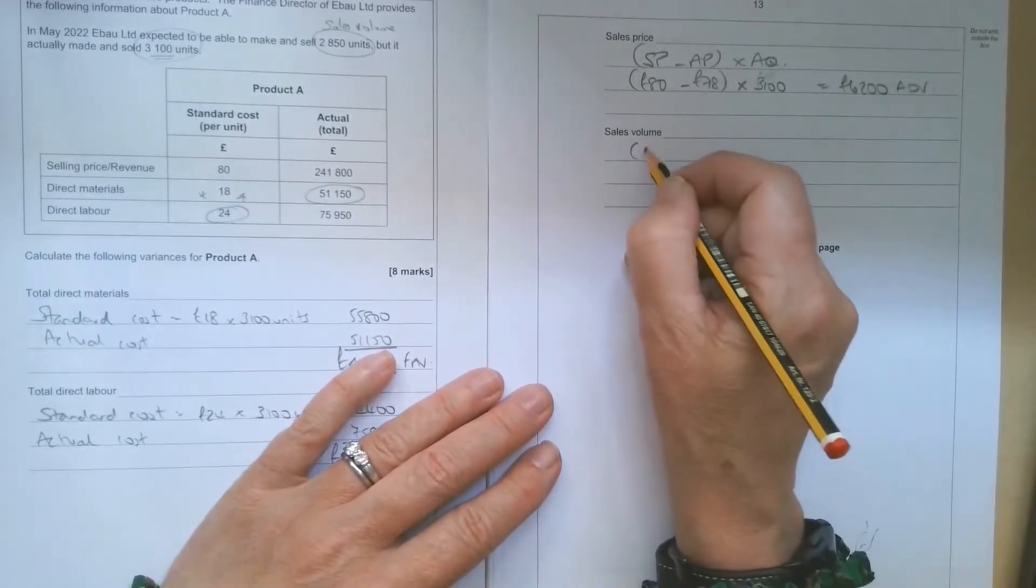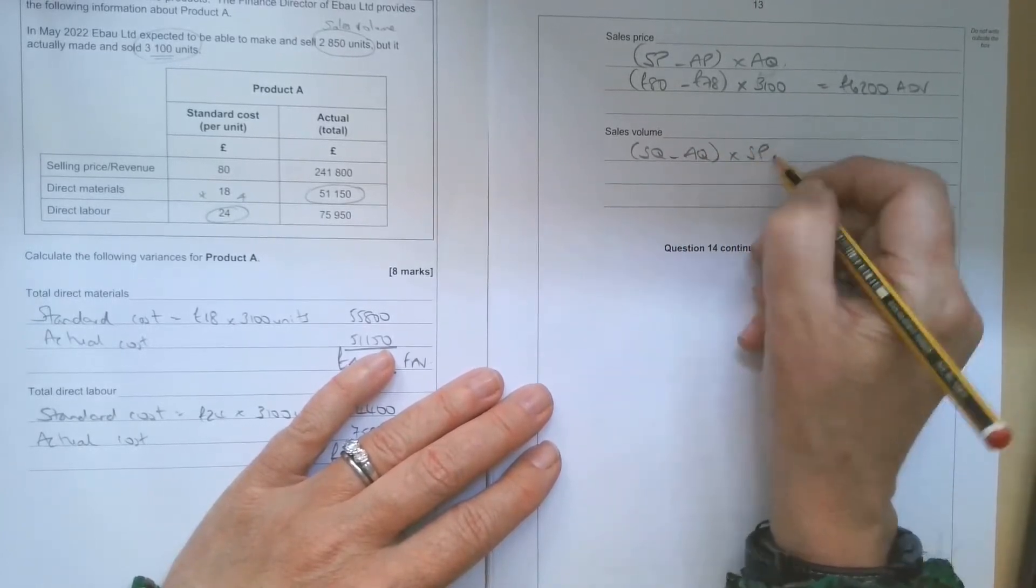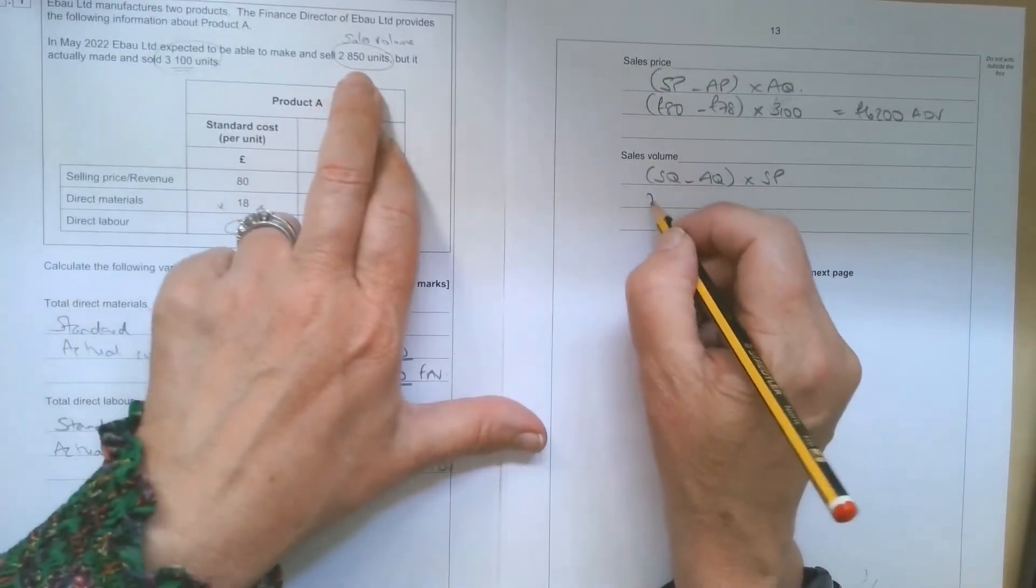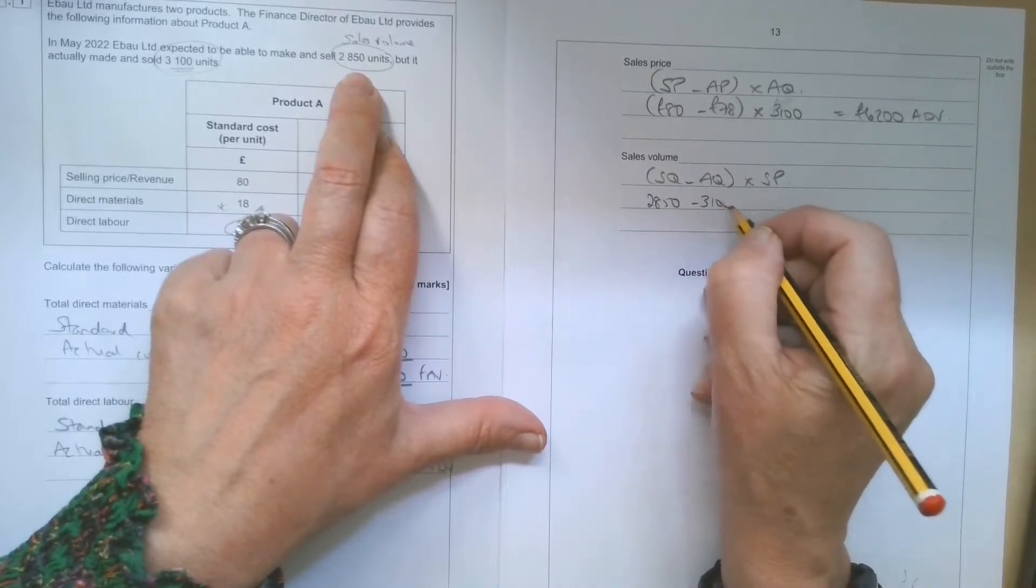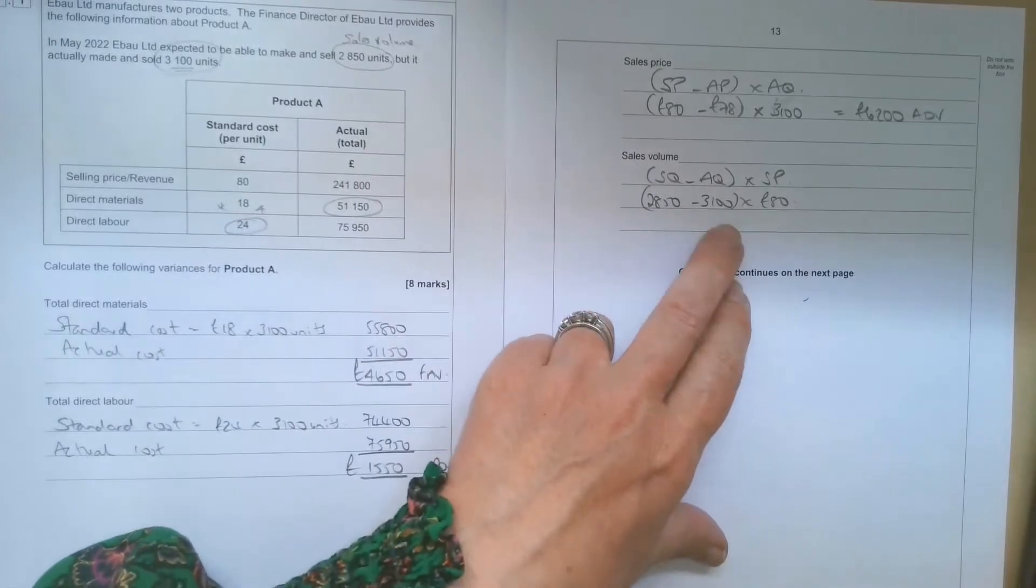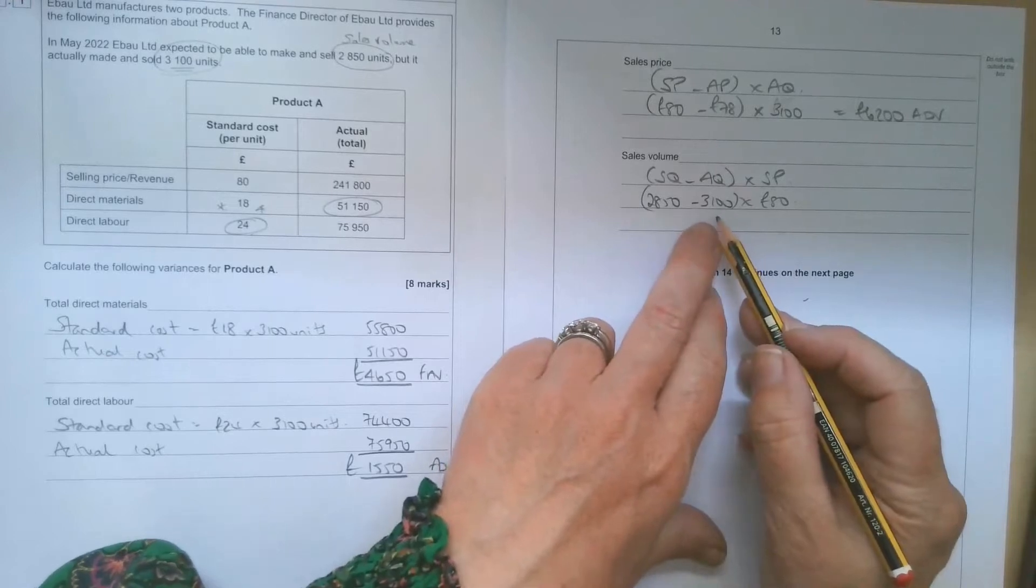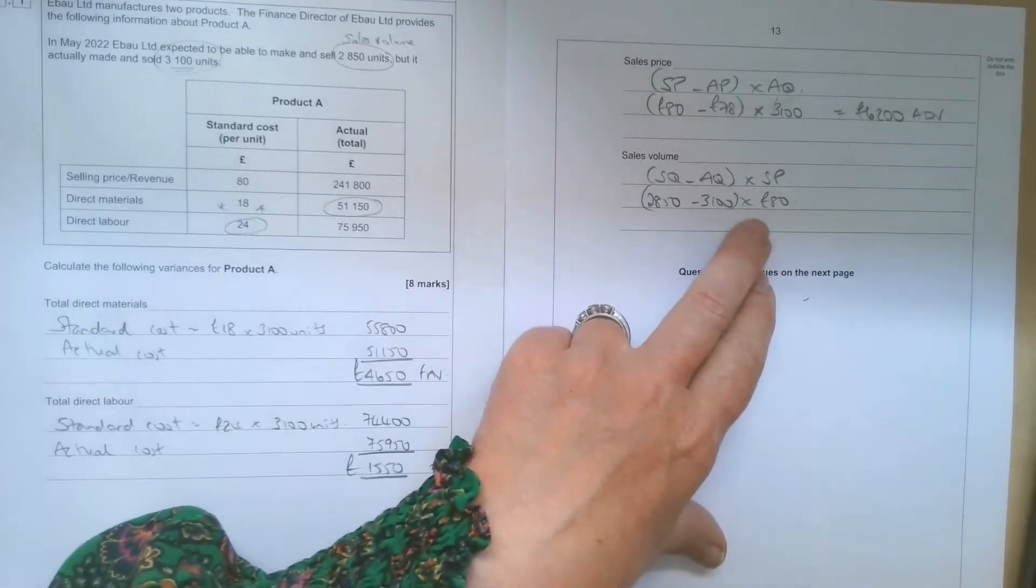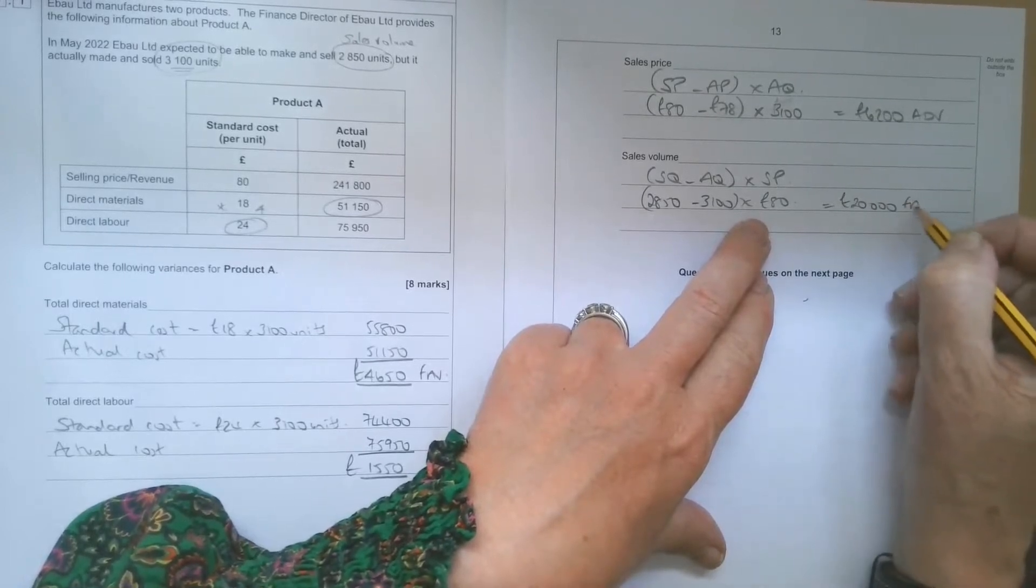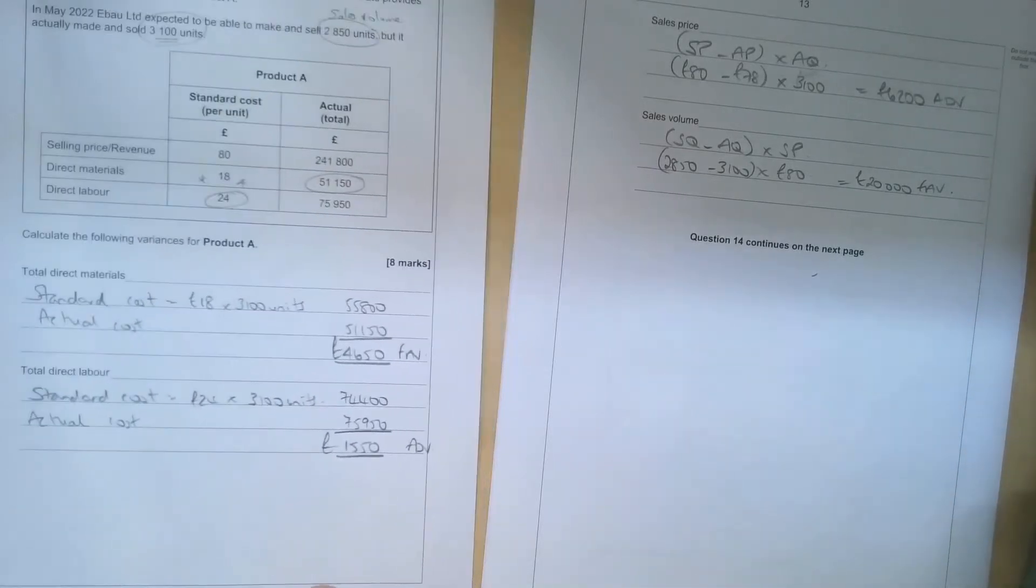Sales volume variance is the standard quantity, what we plan to sell, minus the actual quantity, times by the standard price. So the standard quantity we planned to make was 2,850. We actually made 3,100. That means we're going to get a favourable variance, which is going to be the extra units. So 3,100 minus 2,850 means that we made and sold 250 units more than we planned, times the £80 is a £20,000 favourable variance. So that is part one of the question completed.